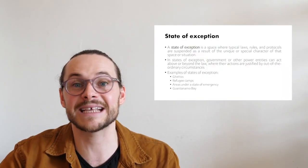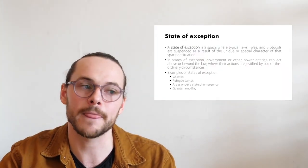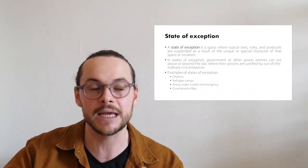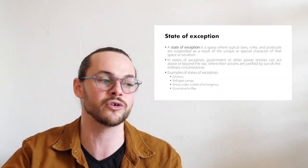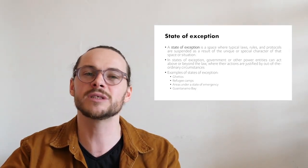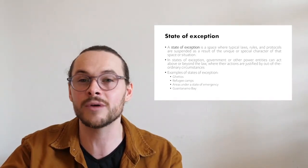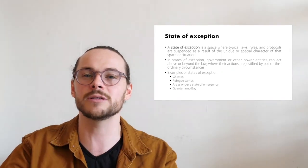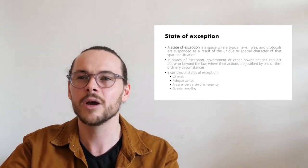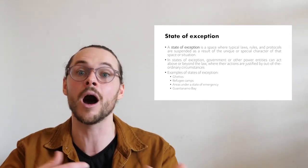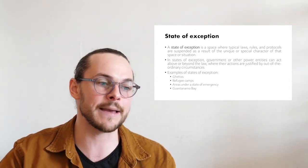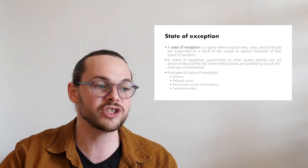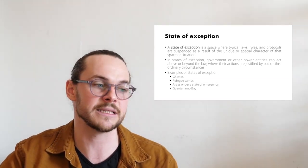Let's move on to the next theme: the state of exception. A state of exception is essentially a space where typical laws, rules, and protocols are suspended as a result of the unique or special character of that space or situation. It's often a delimited geographic space — sometimes time-limited — where it's possible to act beyond the law. In states of exception, government or other power entities can act above or beyond the law, where their actions are justified by out-of-the-ordinary circumstances. Examples include ghettos — poor neighborhoods often closely aligned with ethnically marginalized communities — where police or security forces can do things they probably could not do in other neighborhoods, because there's less oversight.